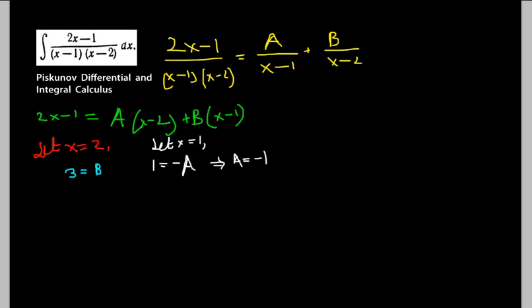Now we can write this as -1/(x-1) plus 3/(x-2). You can check for yourself - multiply and take the LCM and you'll find that the numerator turns out to be 2x-1.